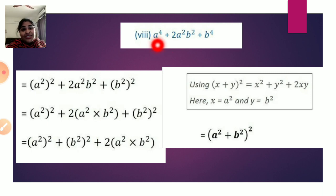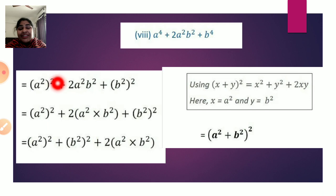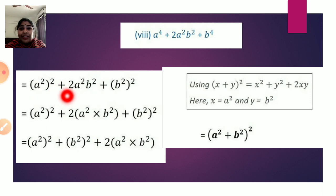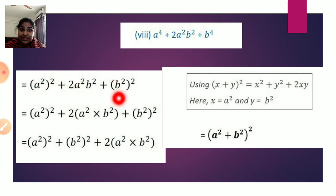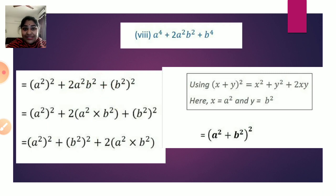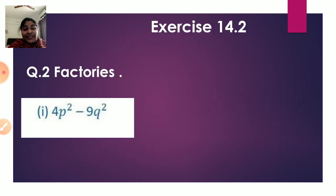The eighth sum is a⁴ + 2a²b² + b⁴. We write a⁴ as (a²)² and b⁴ as (b²)². The expression becomes (a²)² + 2·a²·b² + (b²)², which is in the form a² + 2ab + b² where a = a² and b = b². So the answer is (a² + b²)².